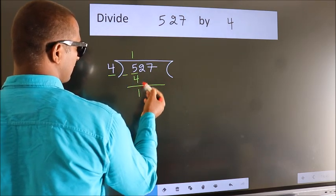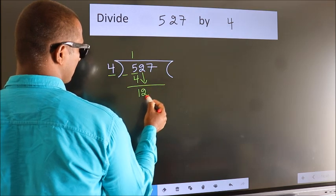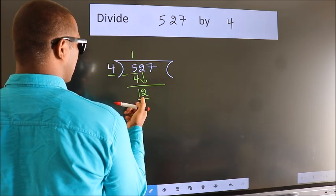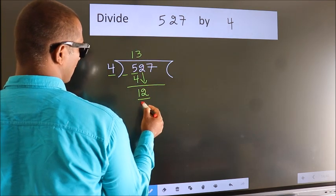After this, bring down the beside number. So, 2 down. So, 12. When do we get 12? In 4 table. 4 threes, 12.